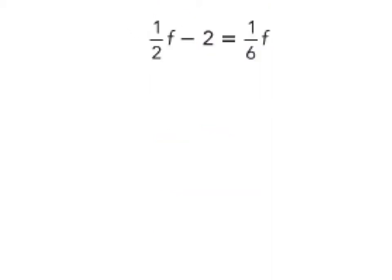For our next one, we have fractions, but we're going to treat it the same way. So I draw my wall. I've got to get this letter to the left. And I've got to get this number, or the negative 2, over to the right hand side. So remember when they cross the wall, their signs change.